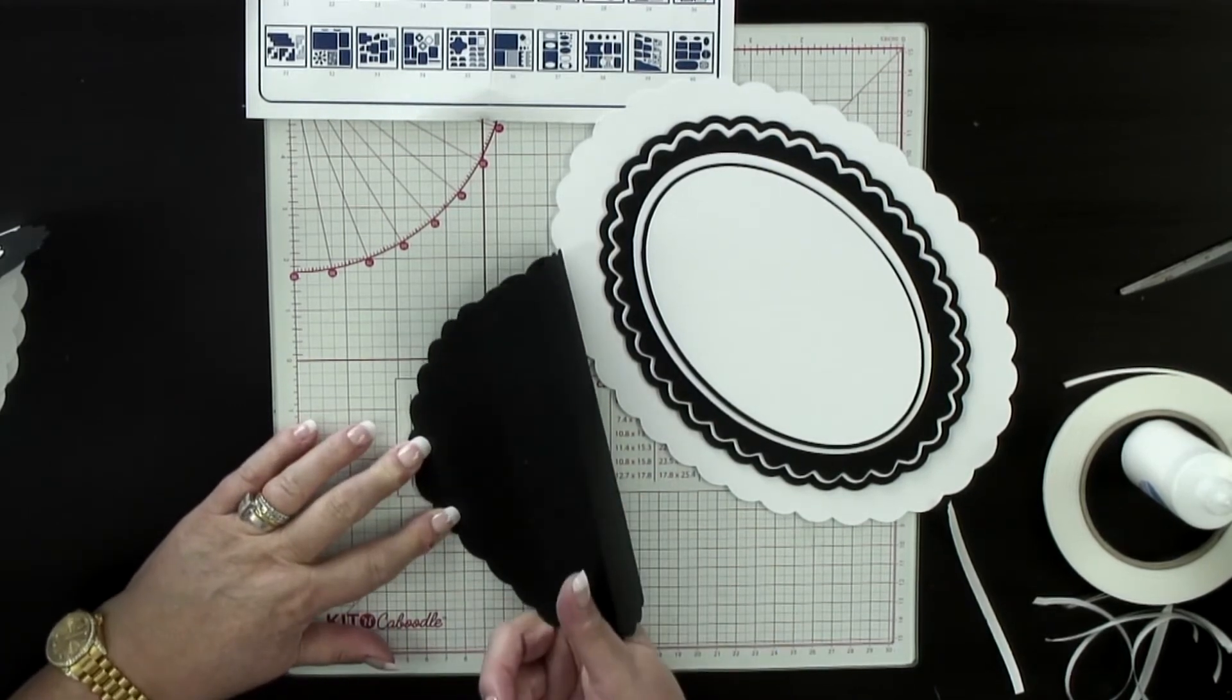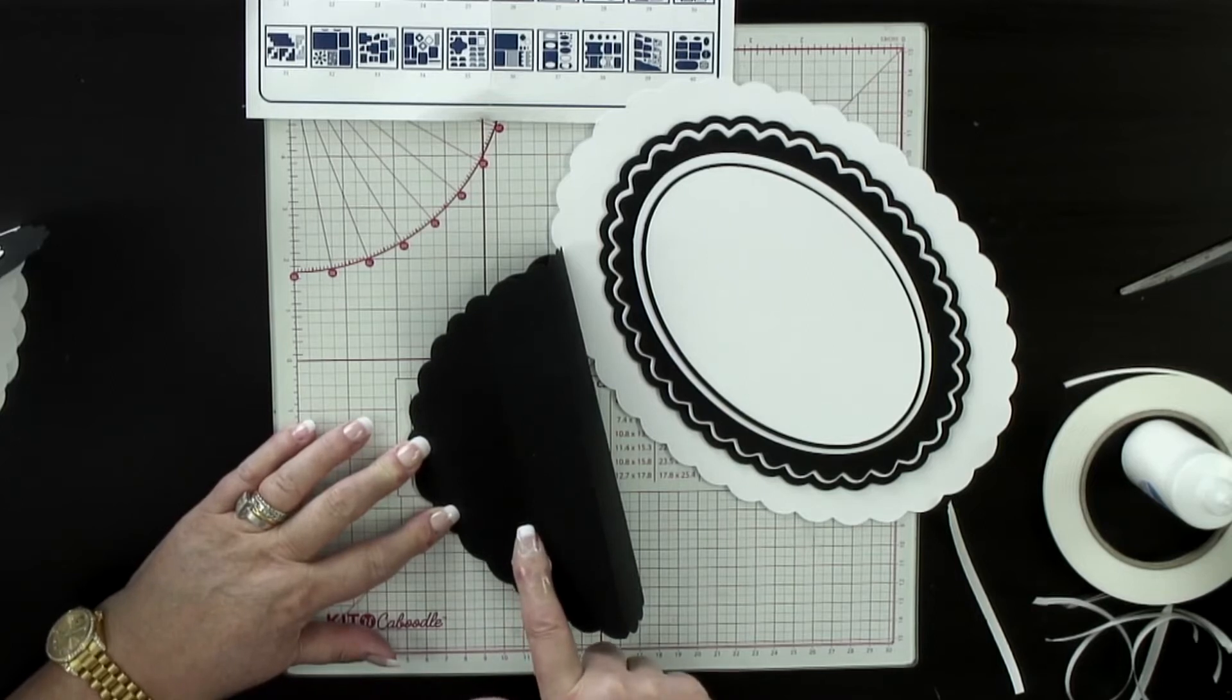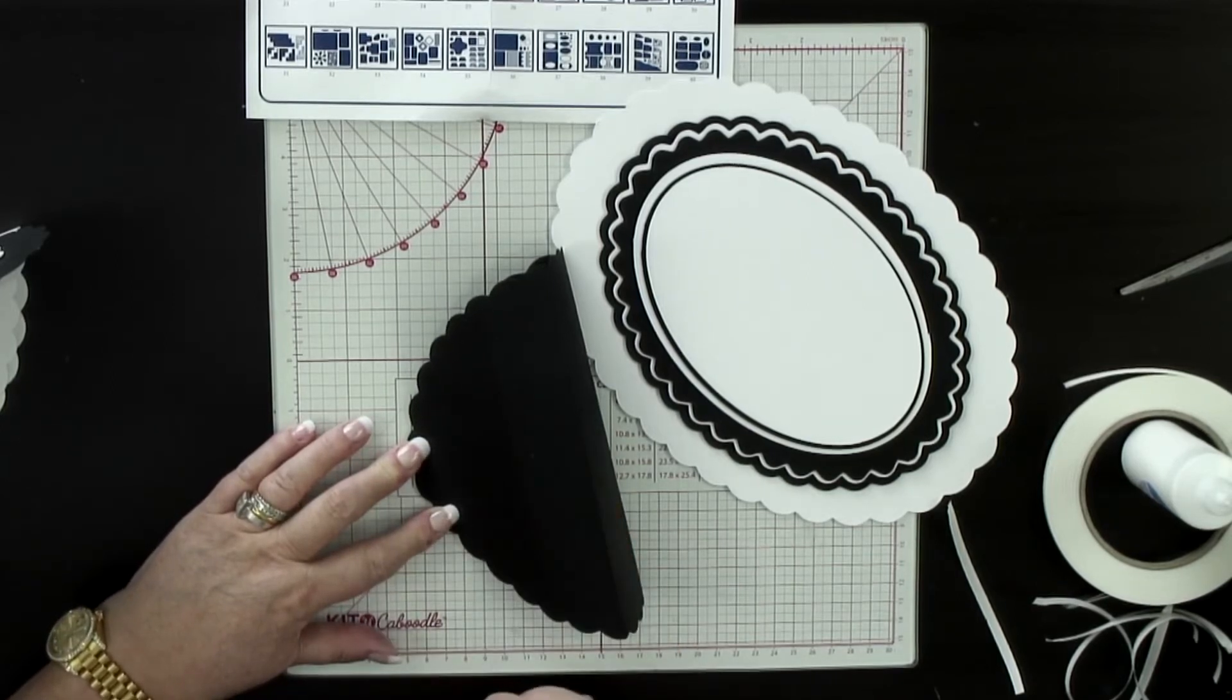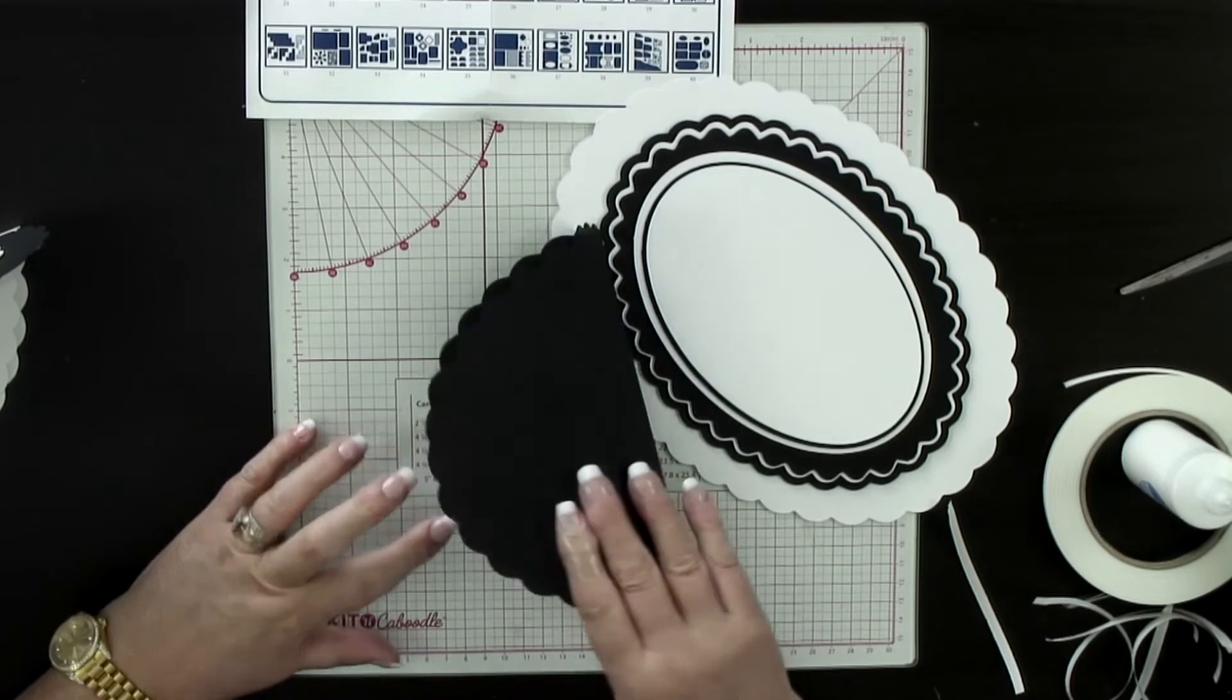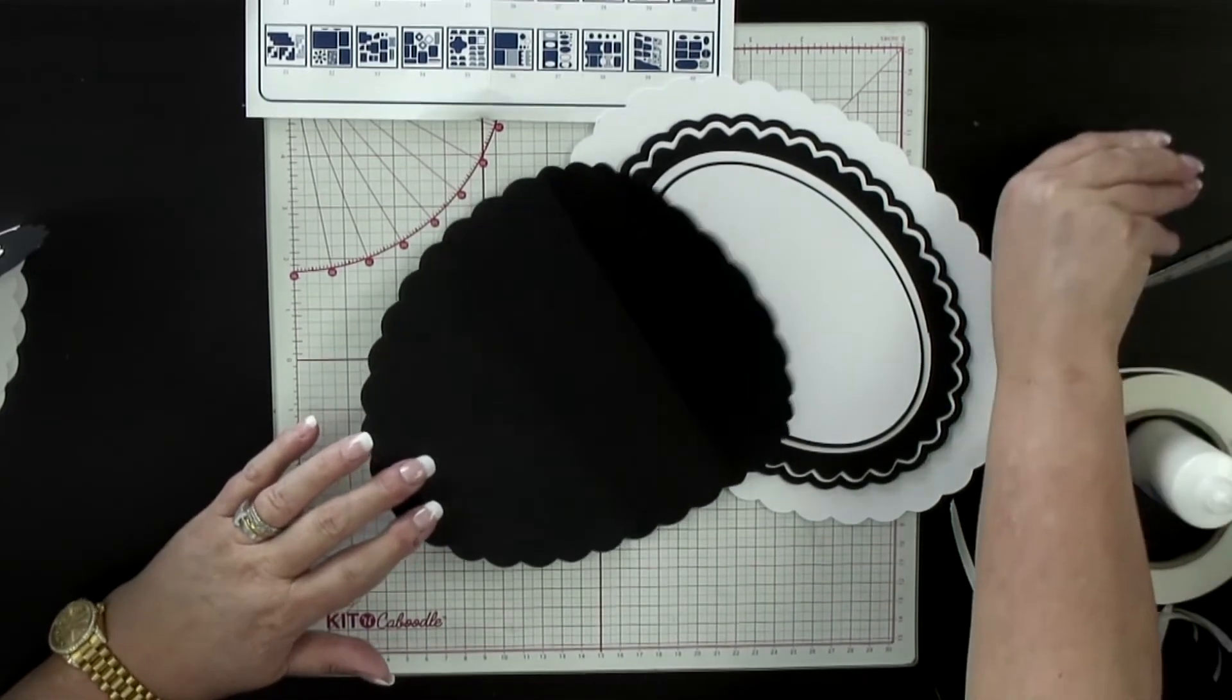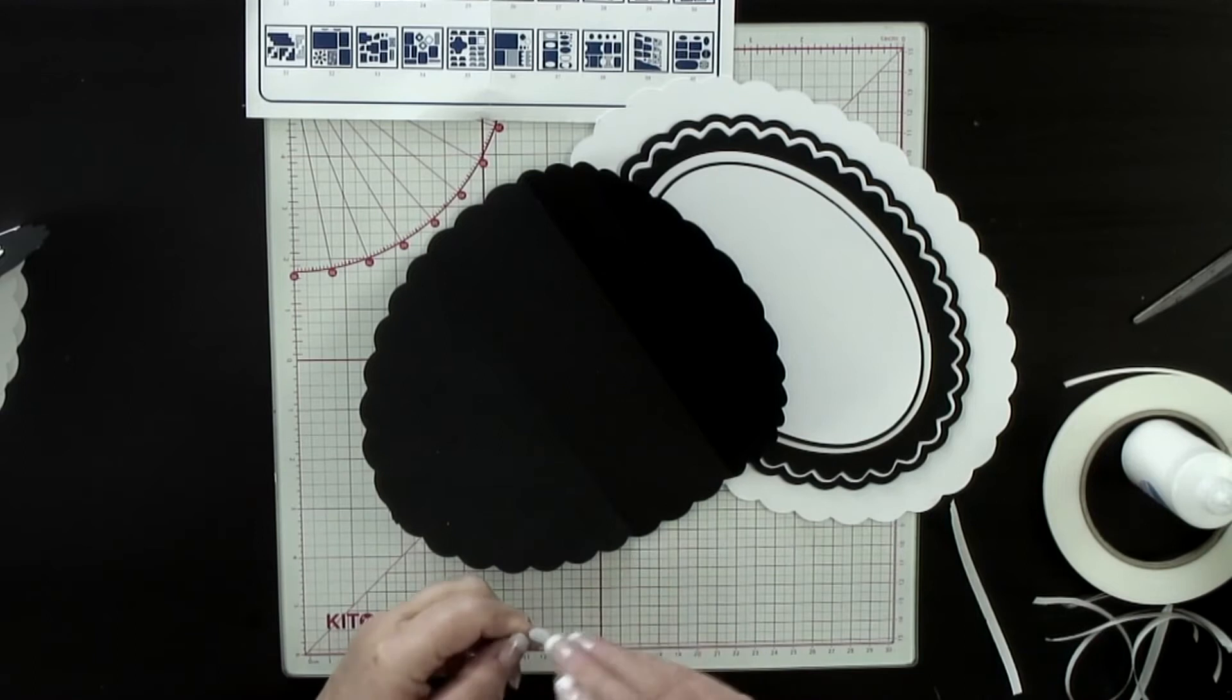Now the reason that we've got this second score line is without it the whole thing sags. But this allows it to lift up. You're then going to need two little dots.